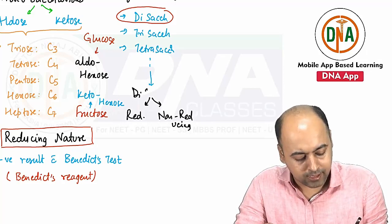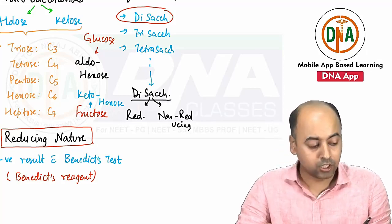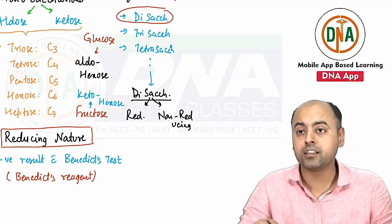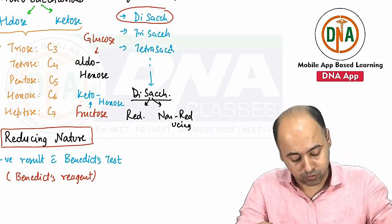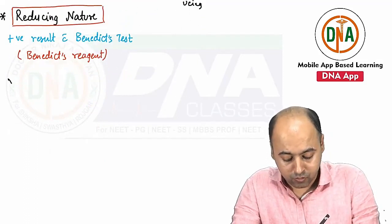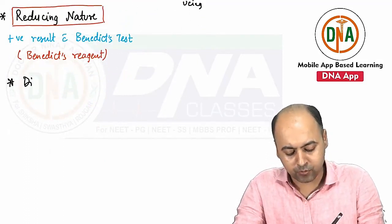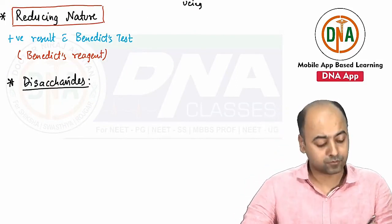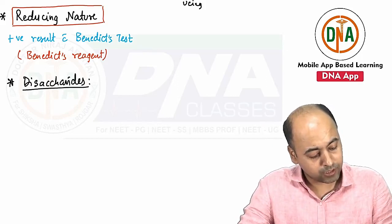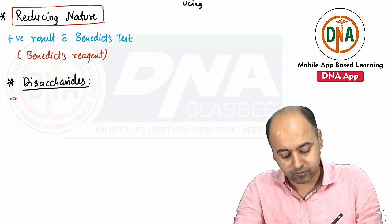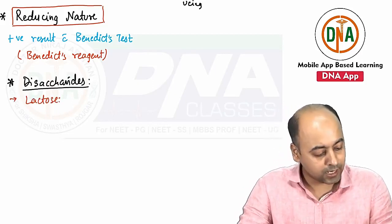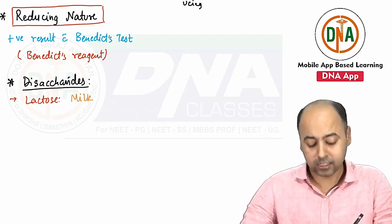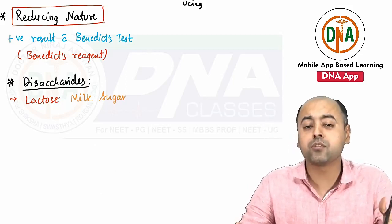Let's look at some important disaccharides. The most common and important disaccharide is lactose. Lactose is present in milk and is therefore commonly known as milk sugar.